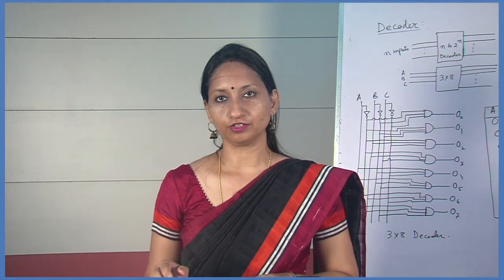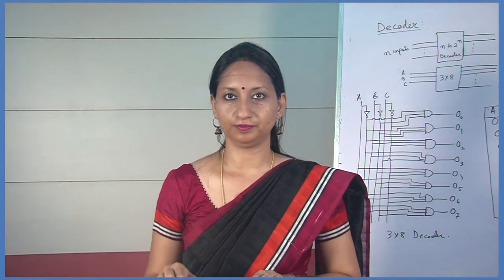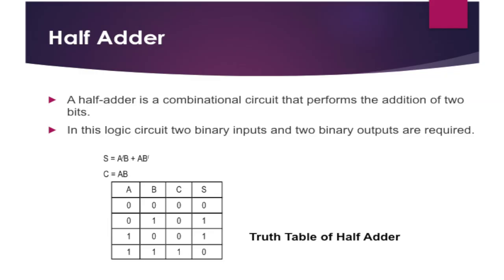Next we see the combinational circuit of adder and subtractor. First, adder — there are two types of adder: one is half adder and the other is full adder. Let us first see a half adder. A half adder is a combinational circuit that performs the addition of two bits. In this logic circuit, two binary inputs and two binary outputs are required.